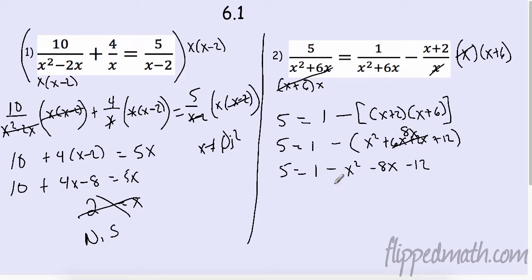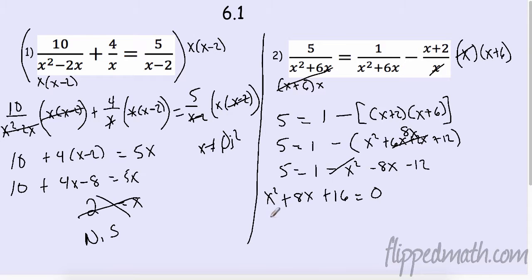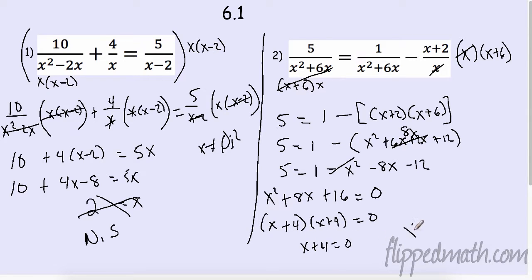I need a positive x squared, so I'm going to bring everything to this side: add x squared, add 8x, and 1 minus 12 is negative 11 so add 11, which gives me x squared plus 8x plus 16. I need to factor this — two numbers that multiply to 16 and add to 8 — that's (x plus 4) times (x plus 4). So x plus 4 equals 0, meaning x equals negative 4.